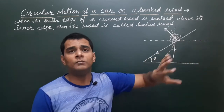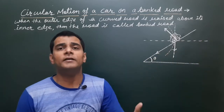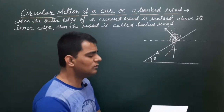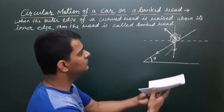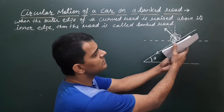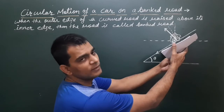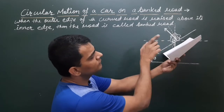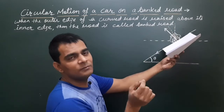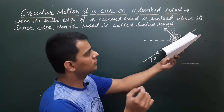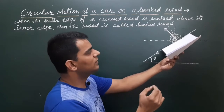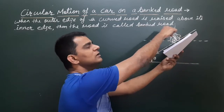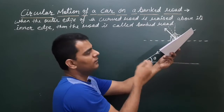This banked road is also circular for us. If I show it in 3D, there is a circular turn like this. So the car we are talking about — suppose this car is in motion along this path, moving along this circular path.